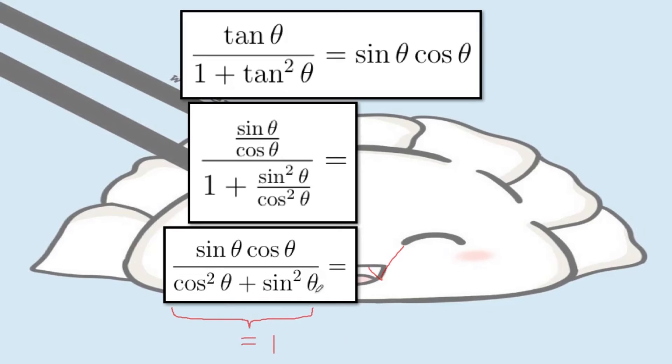Now, since this is 1, this is actually equal to sine theta cosine theta over 1, which is simply sine theta cosine theta.